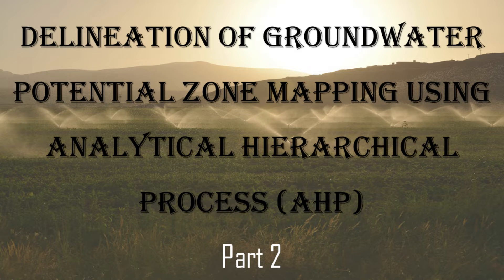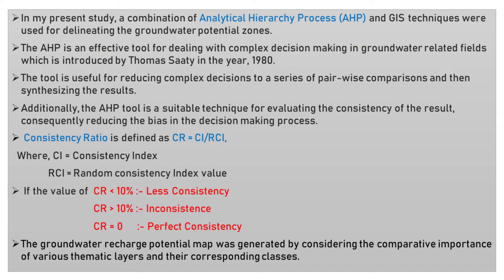Welcome to the Delineation of Groundwater Potential Zone Mapping by Using Analytical Hierarchical Process, Part 2. In the present study, a combination of the AHP process and GIS techniques were used for delineating the groundwater potential zones.